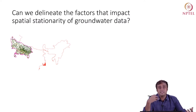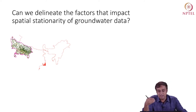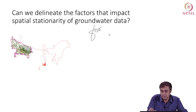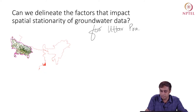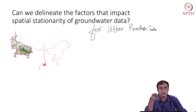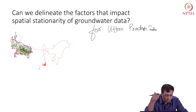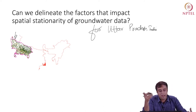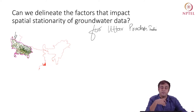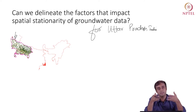The exercise that we are doing here is asking: can we delineate the factors that impact spatial stationarity of groundwater data? We are saying specifically for Uttar Pradesh, India. We have seen these data previously when we did an extensive exercise of exploratory data analysis with these data.